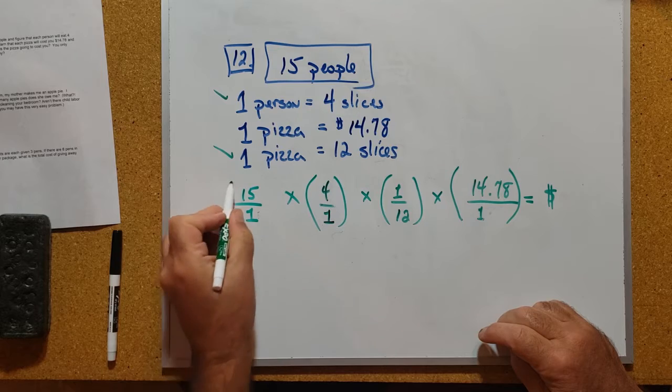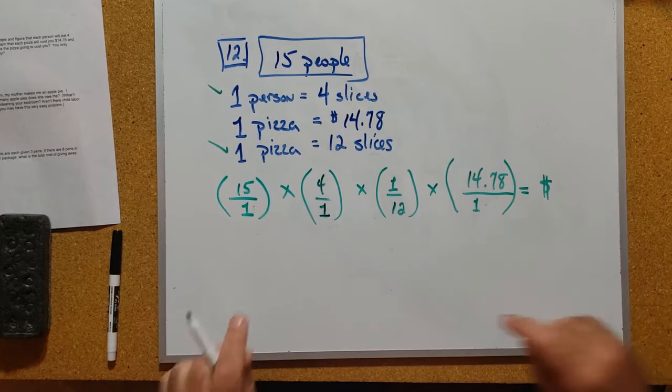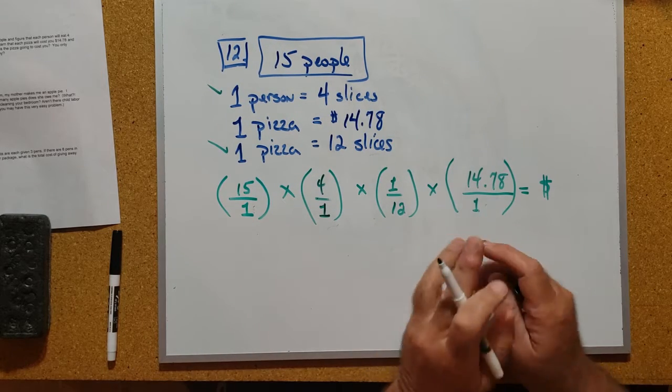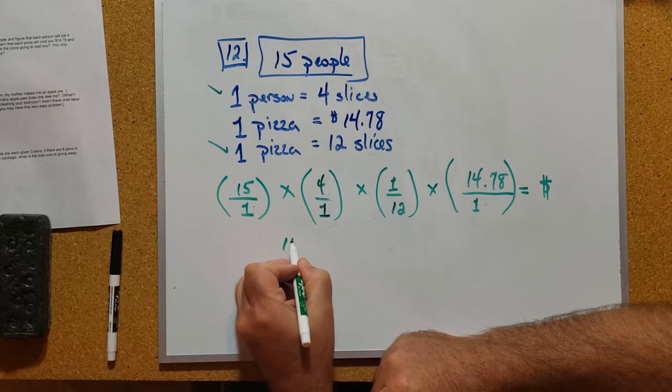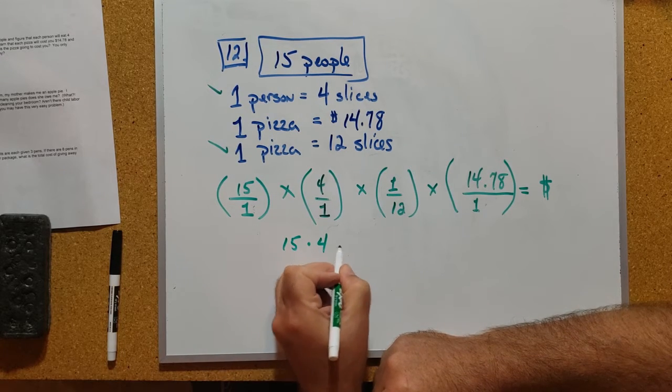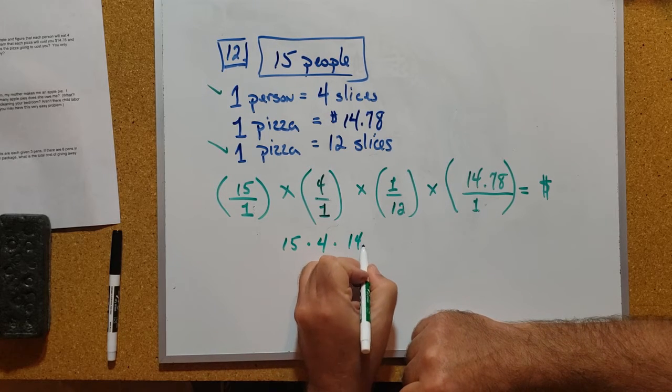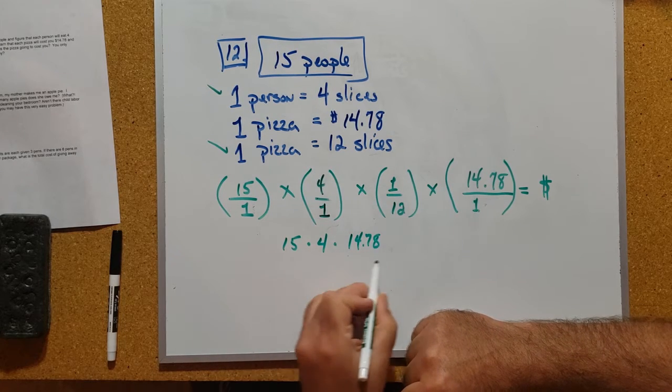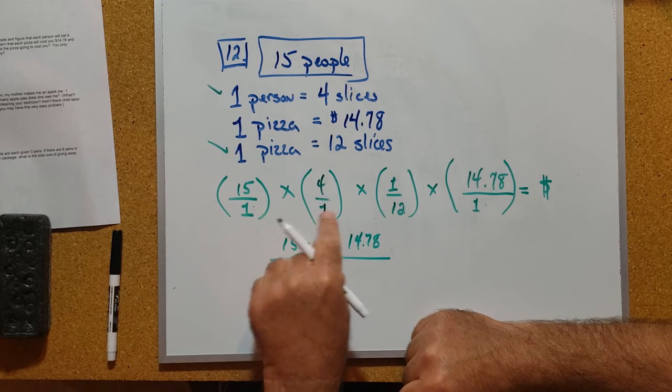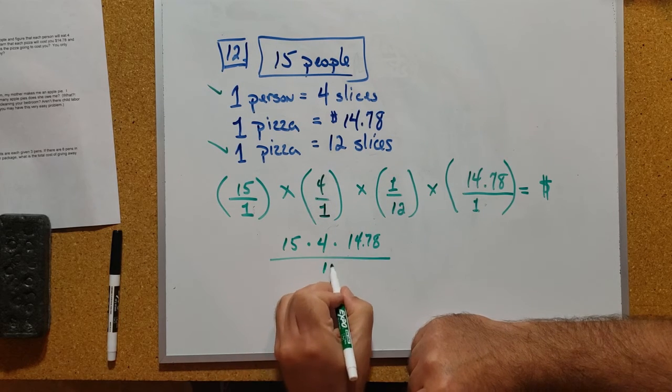I have the number 15 out here; I'm going to turn that into a fraction by putting it over one. How do I multiply fractions? I multiply all the numerators: 15 times 4 times 1 times 14.78, all over 1 times 1 times 12 times 1, which is just 12.